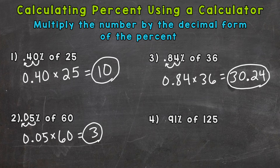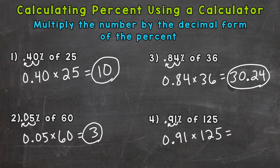And lastly, number 4: what is 91% of 125? Decimal form — move the decimal twice to the left. And we have 91 hundredths times 125, and that gives us an answer of 113 and 75 hundredths.